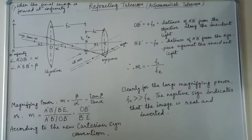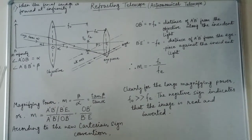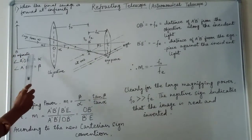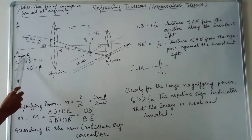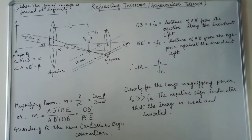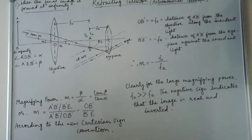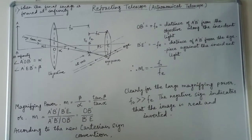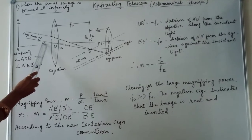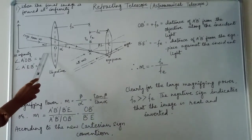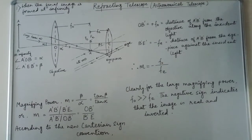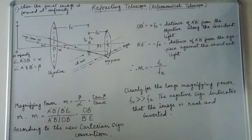Now, as the object is very far off, object AB is very far off, you can say at infinity. The angle subtended by it at the eye is practically equal to the angle alpha subtended by it at the objective. Thus,